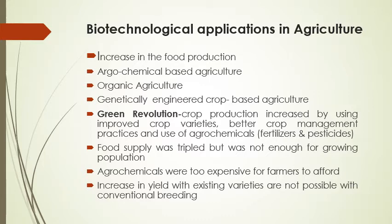The third type is genetically engineered agriculture, where organisms or plants are modified so that they can give high yield or high production of food. The father of the Green Revolution is Dr. M.S. Swaminathan. Crop production increased by using improved crop varieties known as high yielding varieties, better crop management practices, and the use of agrochemicals such as fertilizers. In the Green Revolution, food supply was tripled, but it was still not enough for the growing population.